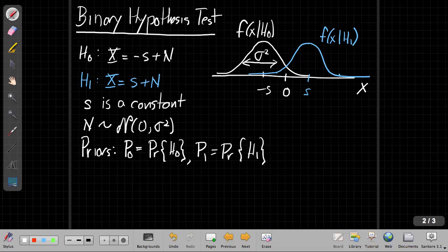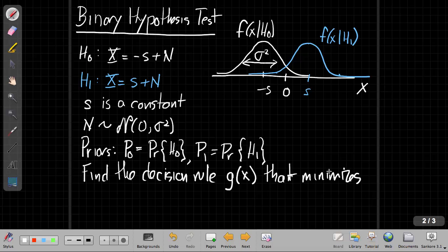Okay, so once we have that, now our goal is to find the decision rule g of x that looks at our observation and comes up with the decision that minimizes the probability of error.